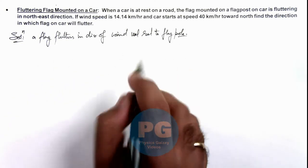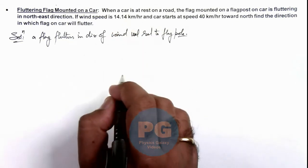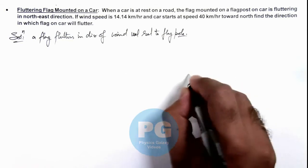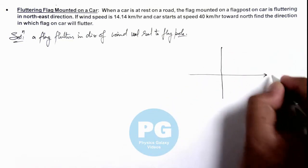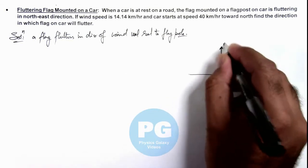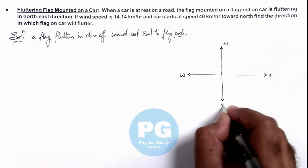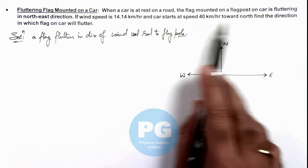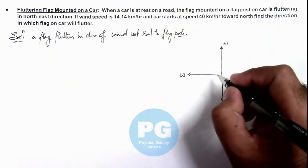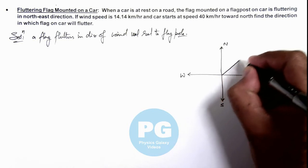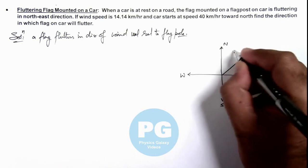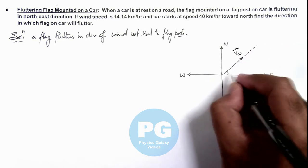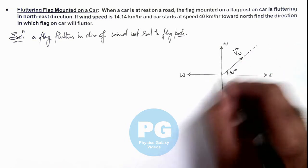The flag is mounted on a flag pole on the car. Looking at the situation with cardinal directions — east, north, west, and south — we are given that the flag mounted on the car is fluttering in the north-east direction. That means this is the direction of wind, because it is the direction in which the flag is fluttering when the car is at rest. So the wind is blowing at an angle of 45 degrees toward north-east.